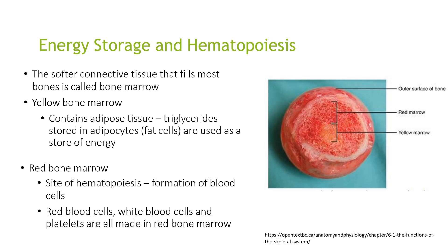The softer connective tissue that fills most bones is called bone marrow. Yellow bone marrow contains adipose tissue, triglyceride stores in adipocytes, and fat cells are used as a store of energy. Red bone marrow is the site of haematopoiesis, which is the formation of blood cells. Red blood cells, white blood cells and platelets are all made in the red bone marrow.